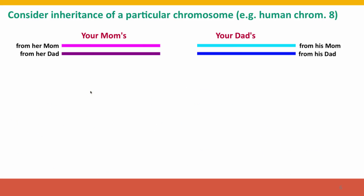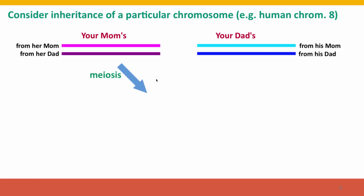There's a second process, called crossing over, that creates even more genetic variation between generations. Now we'll consider just a single chromosome — say chromosome 8 — the two copies in your mother and the two copies in your father. When meiosis produces the gametes from your parents, each gamete contains only one copy of chromosome 8, but it's not either original copy. It's a copy that's a new combination of segments from the two parental chromosomes — literally because there have been breaks and joins in the continuity of the chromosome.